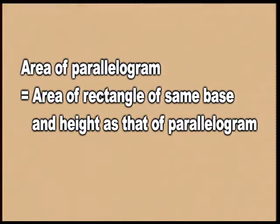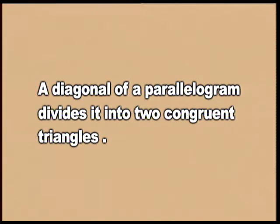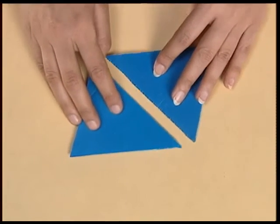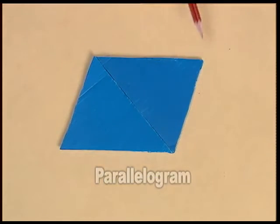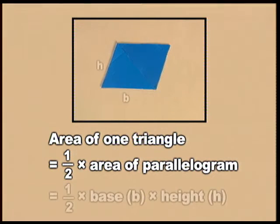Thus we infer that the area of a parallelogram is the same as the area of a rectangle, which is base into height. You all know another property of a parallelogram: a diagonal of a parallelogram divides it into two congruent triangles. So let us take these two congruent triangles and join them to form a parallelogram. The area of one triangle will be half the area of the whole parallelogram, so the area of a triangle is half into base into height.